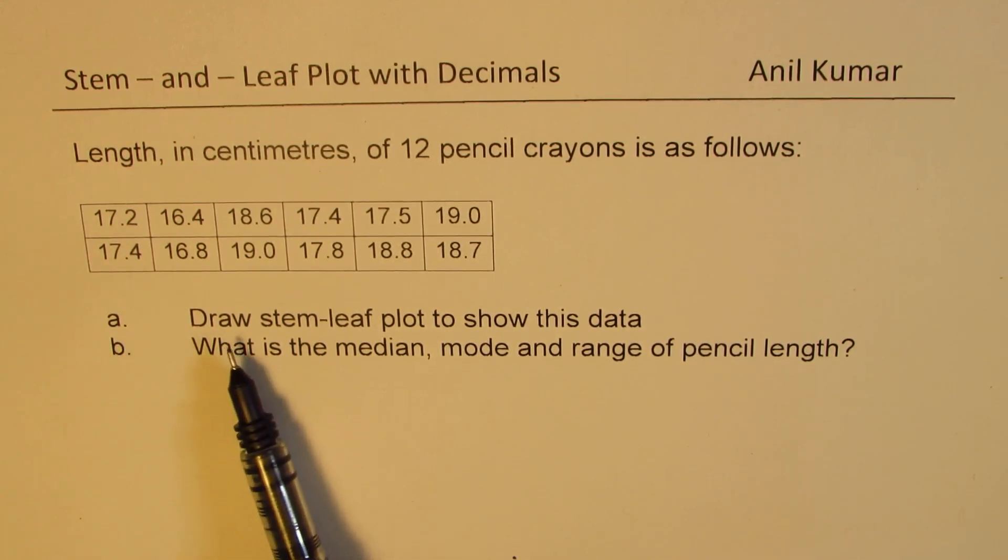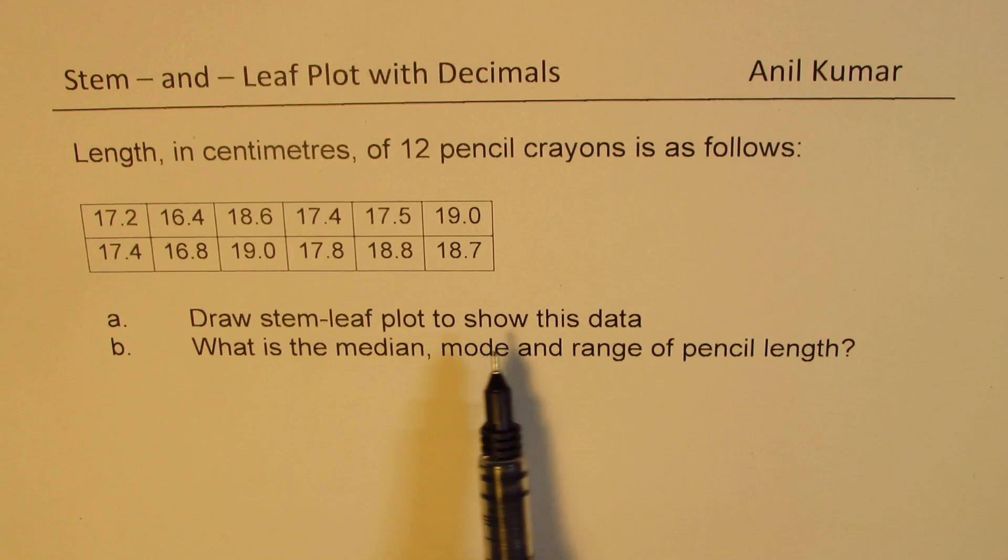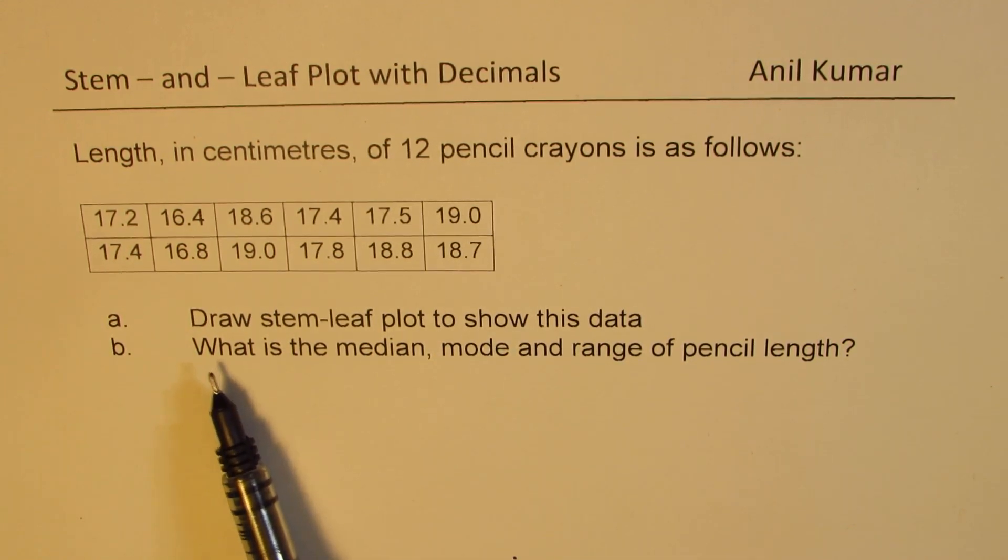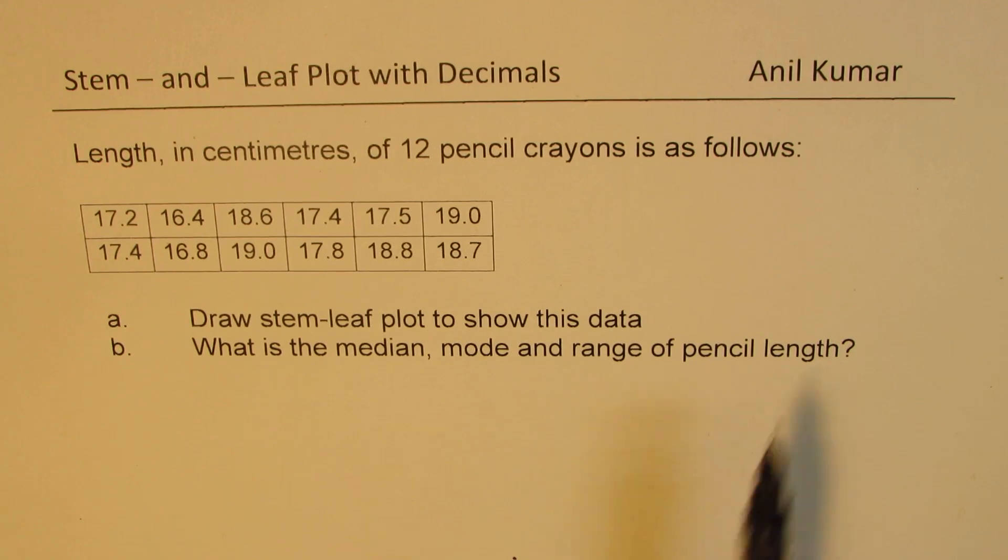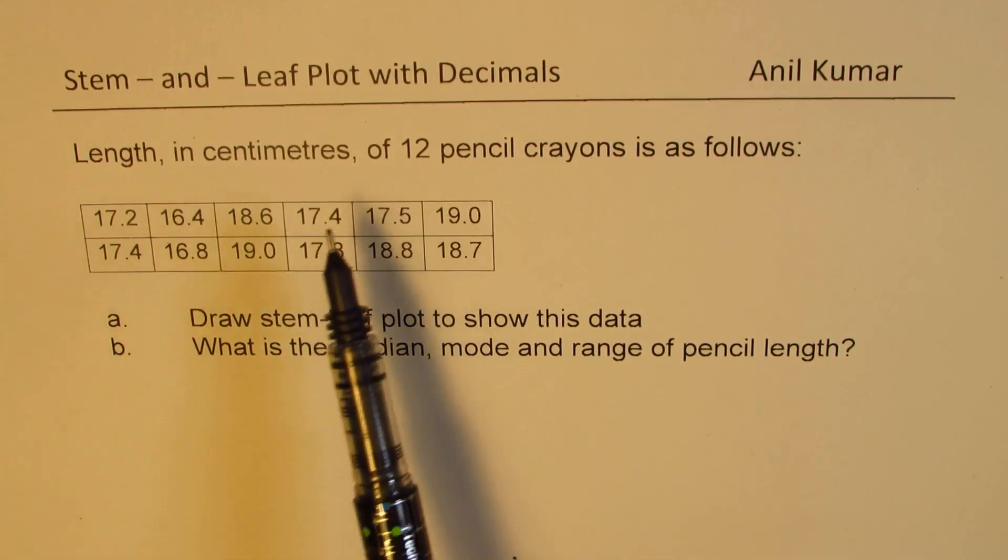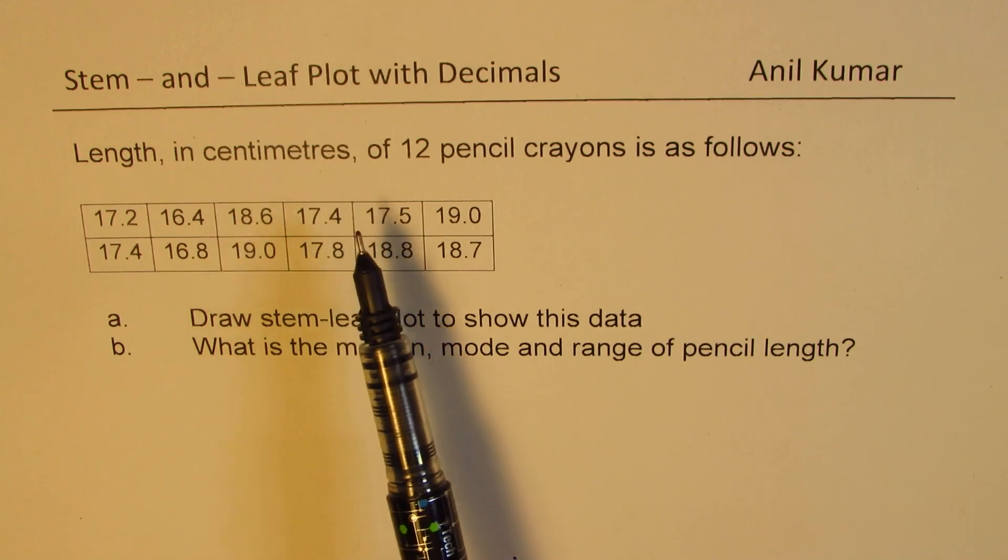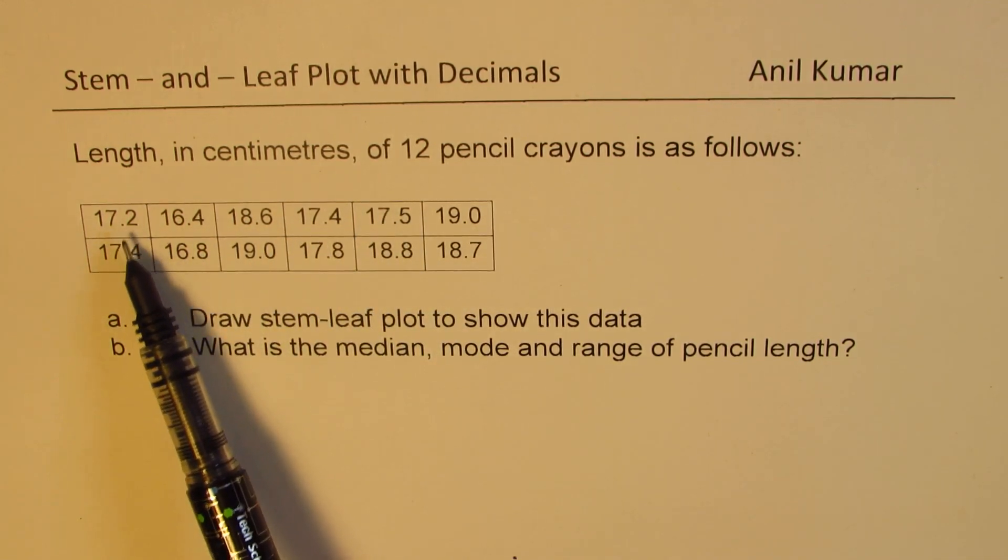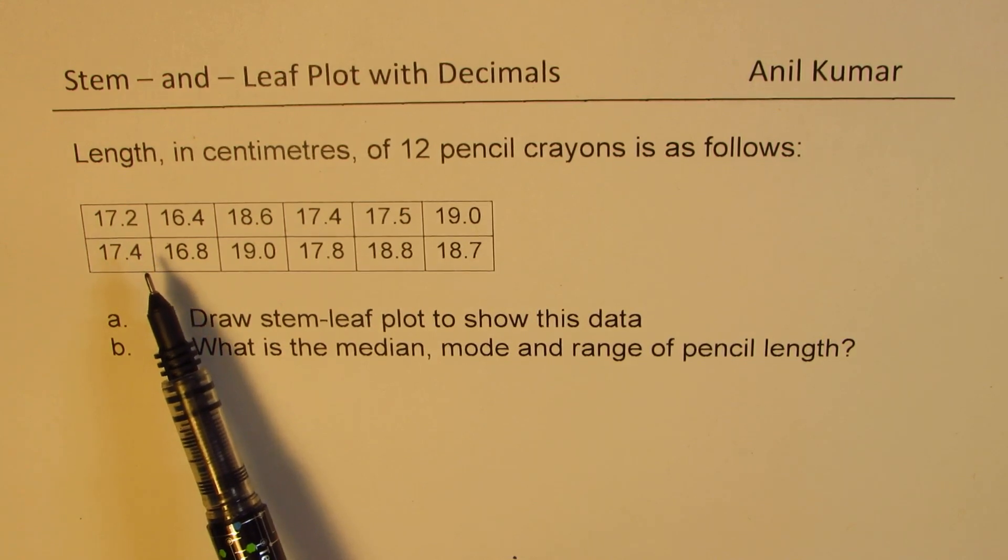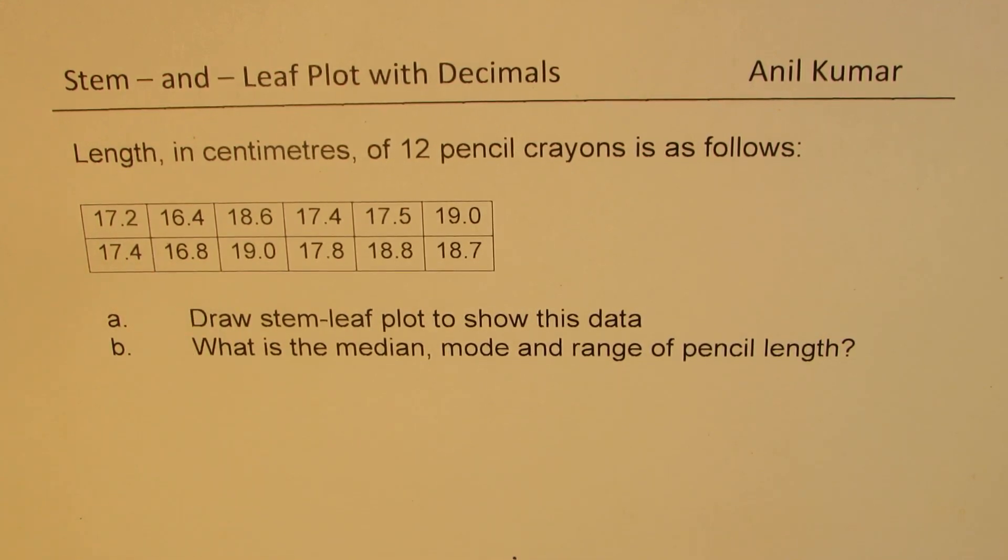You need to do these two things: (a) draw stem leaf plot to show this data, and (b) what is the median, mode and range of pencil length. So whenever you want to plot stem and leaf plots, the idea is to isolate the last digit and put it in the leaf part. We'll do it in two steps.